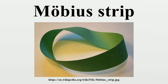It was discovered independently by the German mathematicians August Ferdinand Möbius and Johann Benedikt Listing in 1858. An example of a Möbius Strip can be created by taking a paper strip and giving it a half twist, and then joining the ends of the strip together to form a loop. However, the Möbius Strip is not a surface of only one exact size and shape, such as the half-twisted paper strip depicted in the illustration.